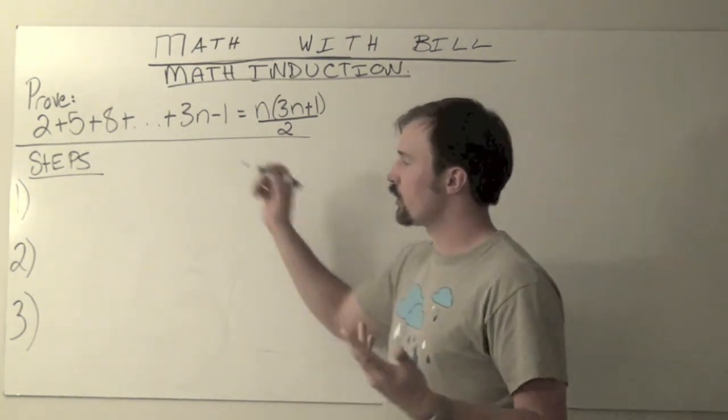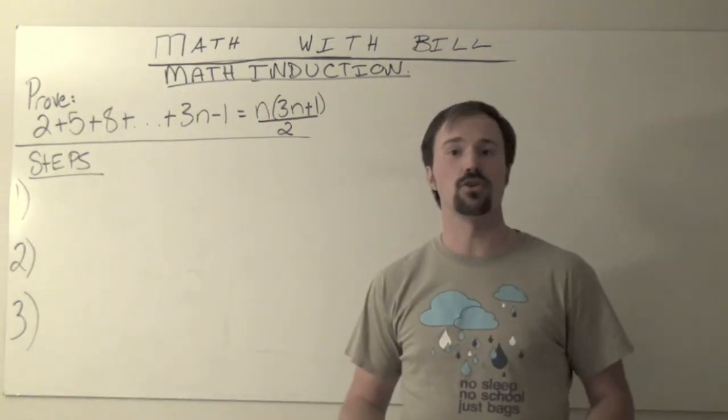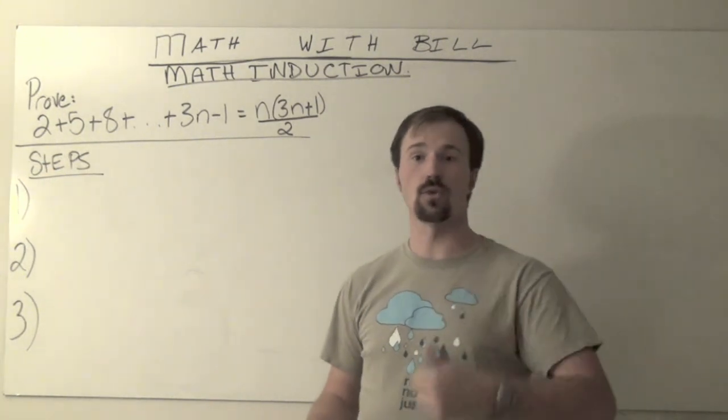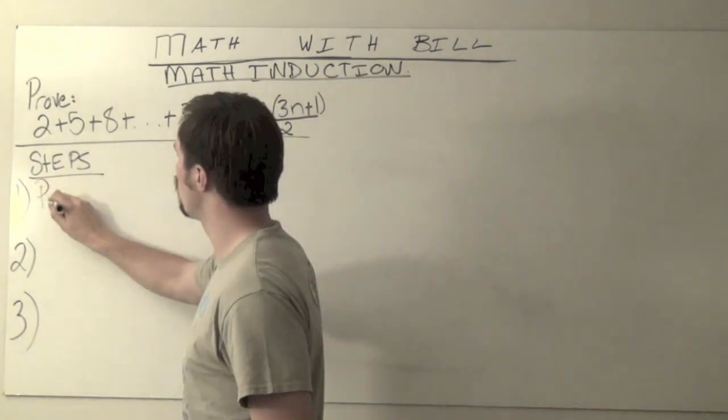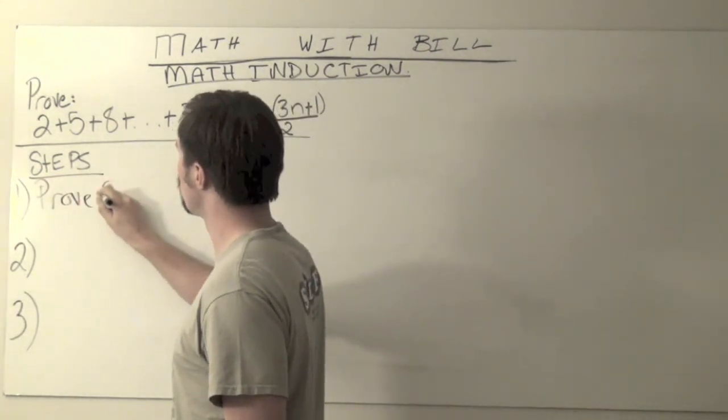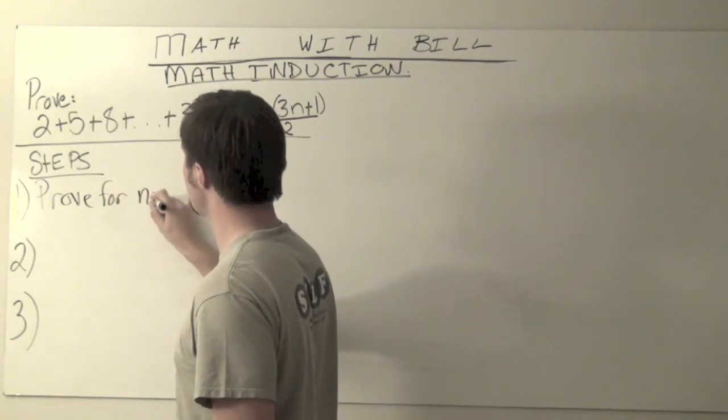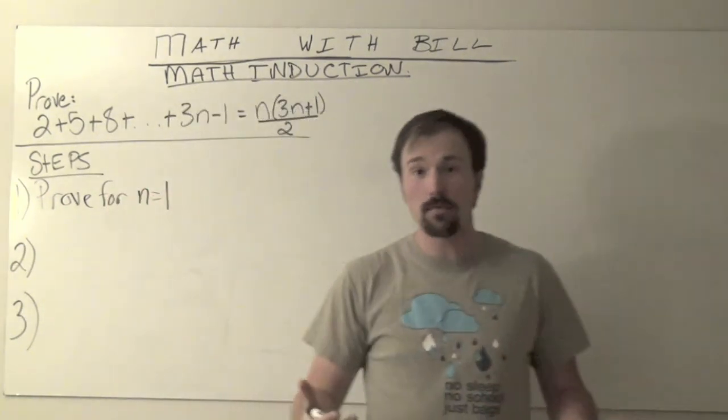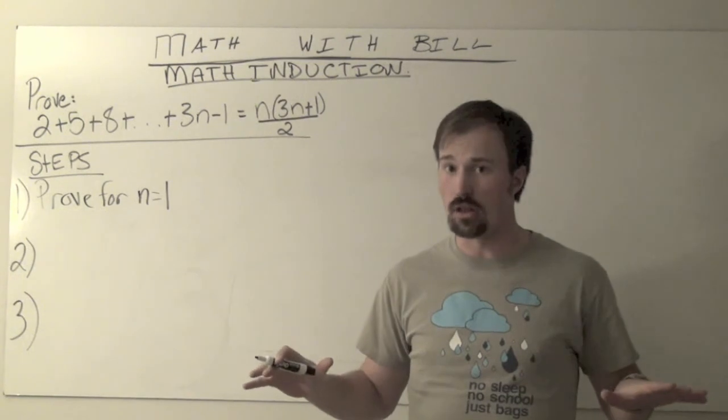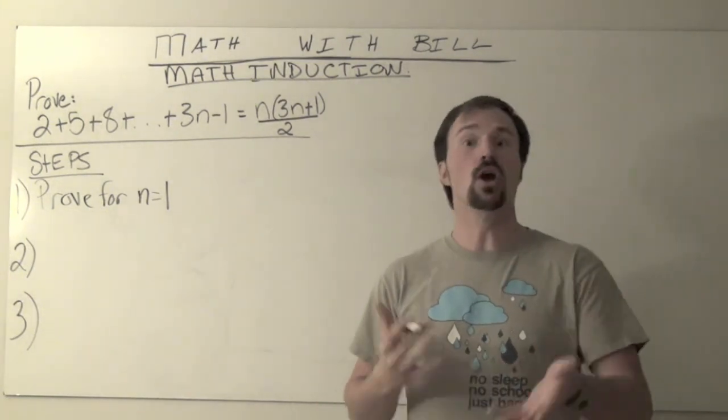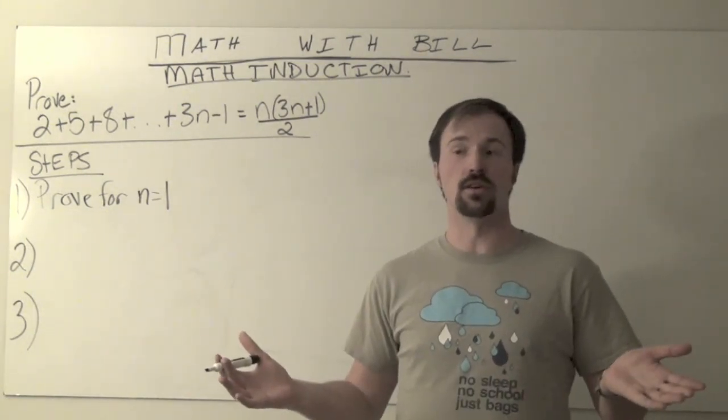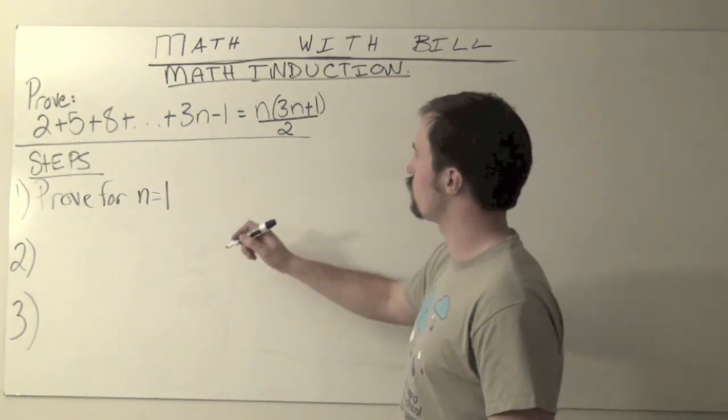Okay, so there are three basic steps every time you do a mathematical induction. First one is to prove for when n is equal to 1. We've got to make sure that this works at all. If it fails at 1 we shouldn't be using the pattern. So let's prove it for 1.